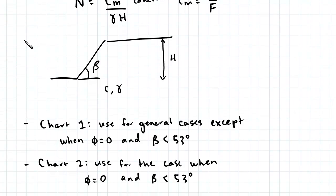So Taylor produced two charts which we can use in undrained analysis. Chart one is used for general cases except for when the angle of friction of the soil is equal to zero and when the angle of the soil is less than 53 degrees. And chart two is used for the specific case when the angle of friction of the soil is equal to zero and when the slope of the soil is less than 53 degrees.